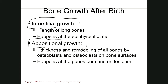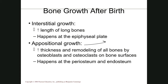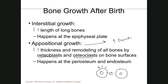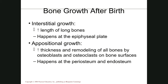Appositional growth makes bones bigger or smaller in diameter, controlled by osteoblasts and osteoclasts working at the periosteum — the outer membrane. Bones also get longer through interstitial growth, which happens at the epiphyseal plate. So bones grow two ways: longer at the epiphyseal plate, and bigger or smaller in diameter at the periosteum.